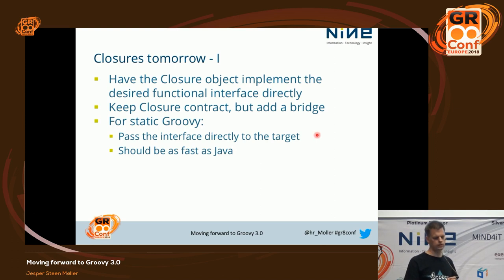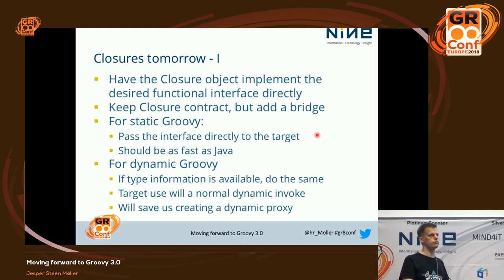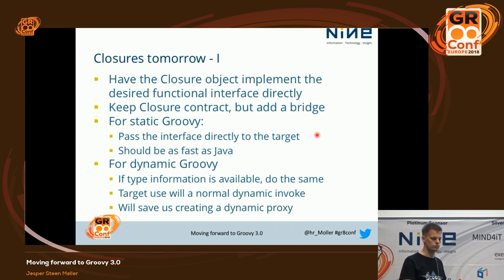For static Groovy, we'll be able to pass the interface directly to the target — it should be as fast as Java and with as low memory overhead. For dynamic Groovy, it will also be an improvement, because dynamic Groovy might already know at compile time which method is being called and which functional interface it refers to, so it can generate the bridge method. Then at runtime, the dynamic invocation would directly see that the object being passed in is of the right type, saving the work of creating a dynamic proxy.